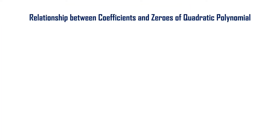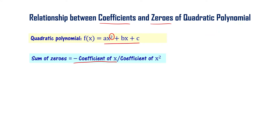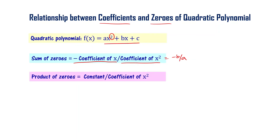Let us now quickly summarize what we have learned. For a quadratic polynomial ax square plus bx plus c, the highest power of x is 2 and its degree is 2. The relationship between coefficients and zeros: sum of zeros equals minus b by a, which is minus coefficient of x divided by coefficient of x square; and product of zeros equals c by a, which is constant divided by coefficient of x square.